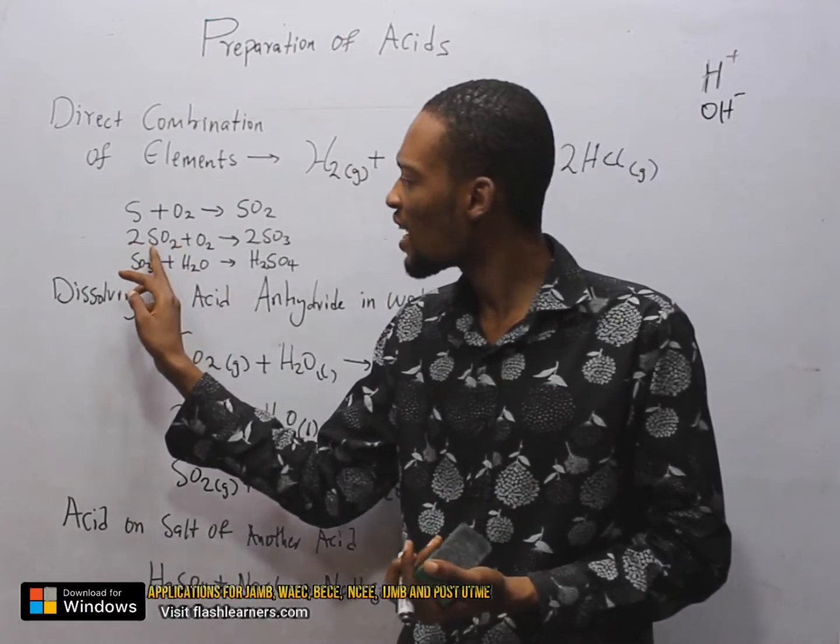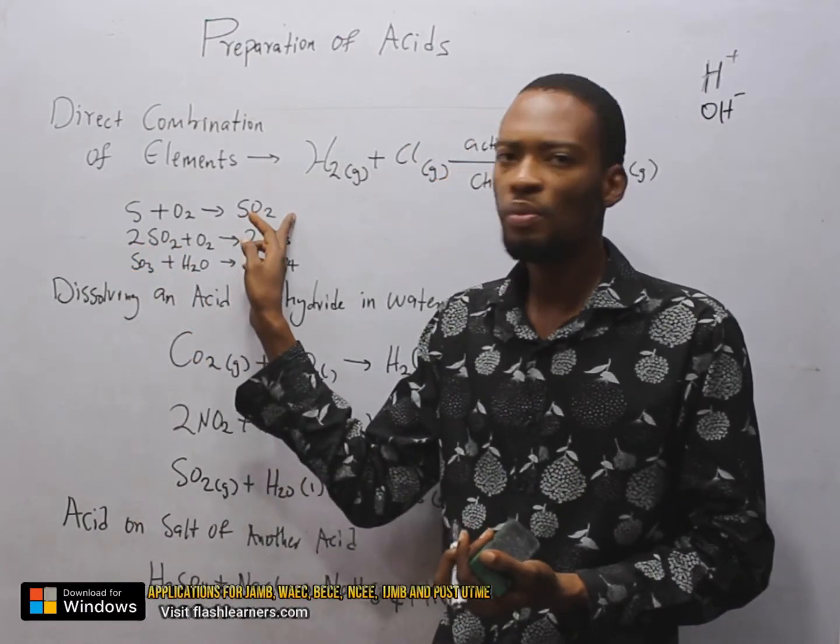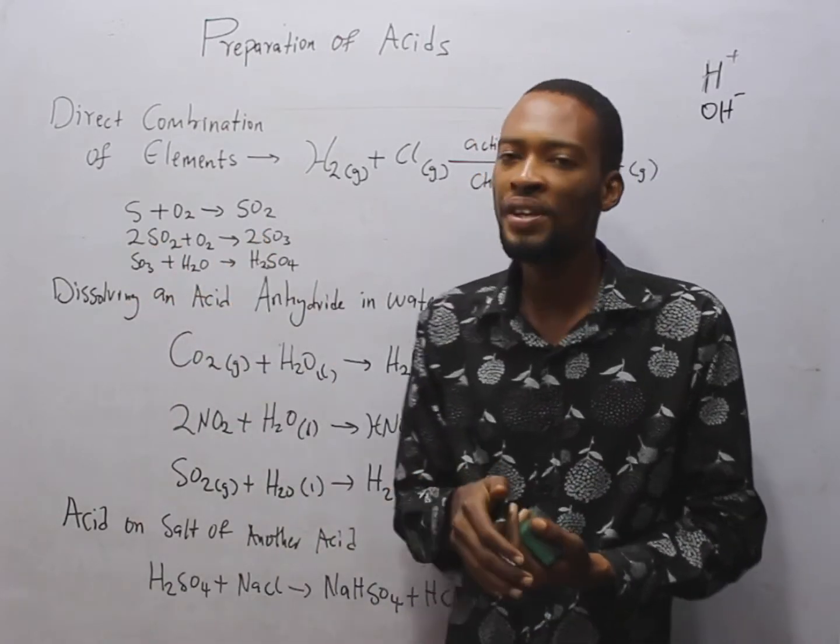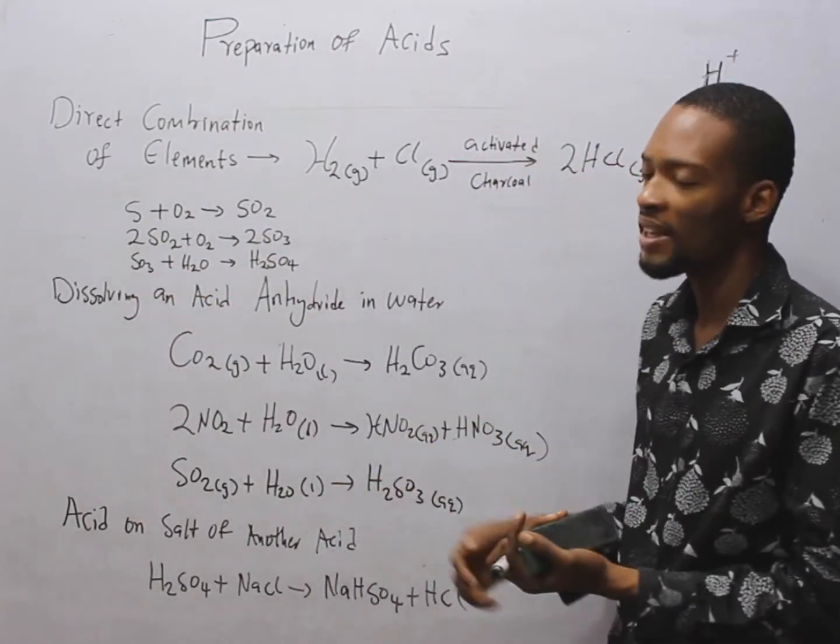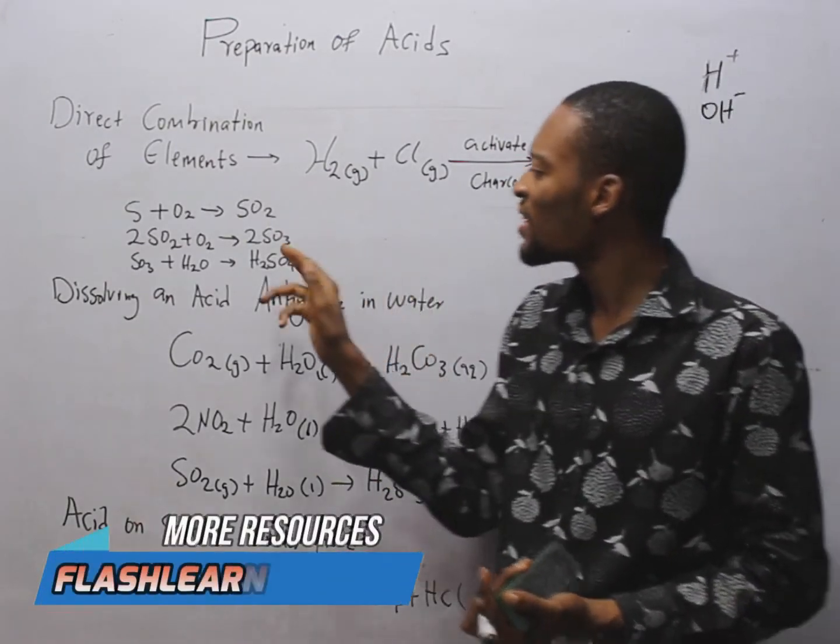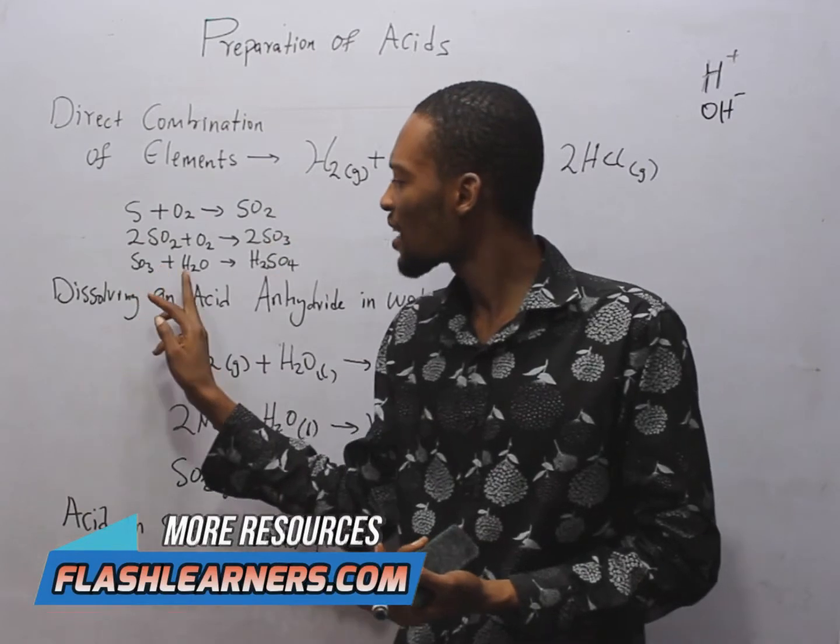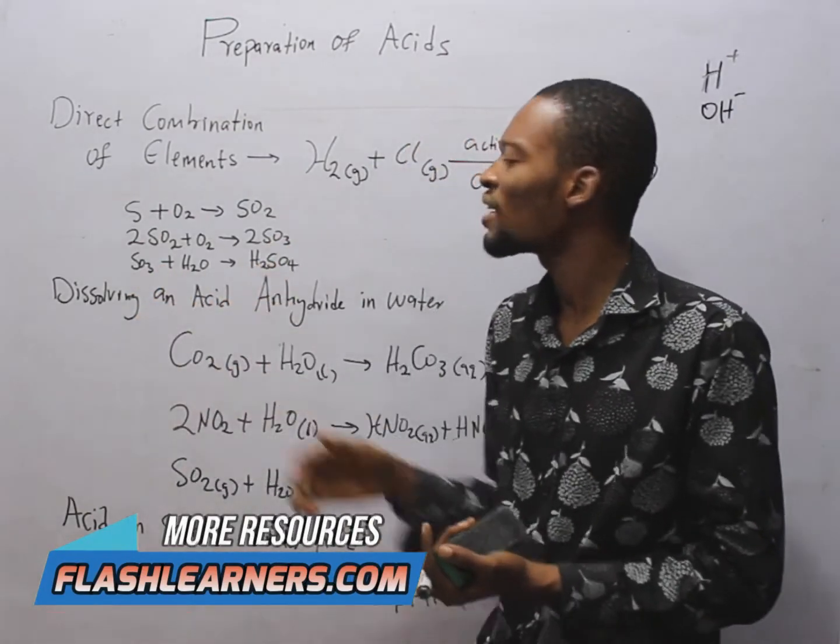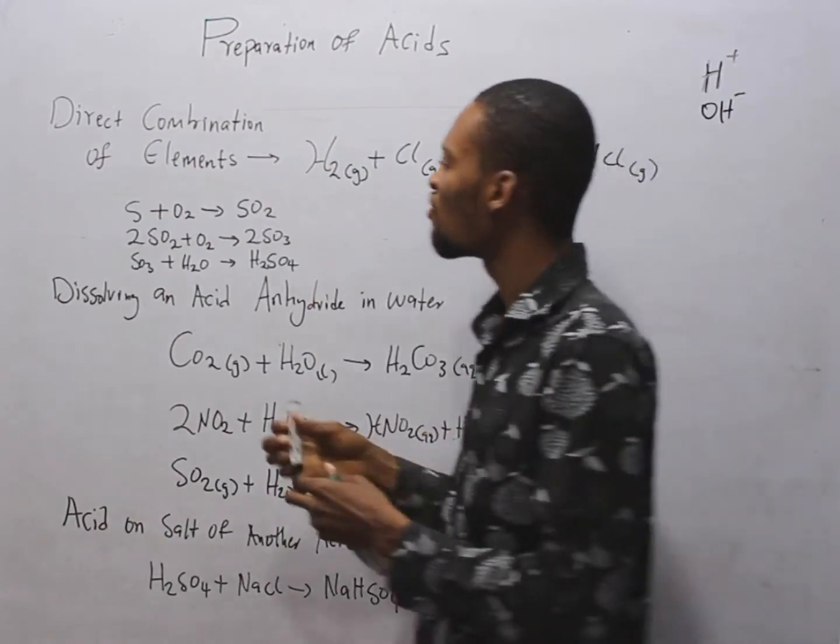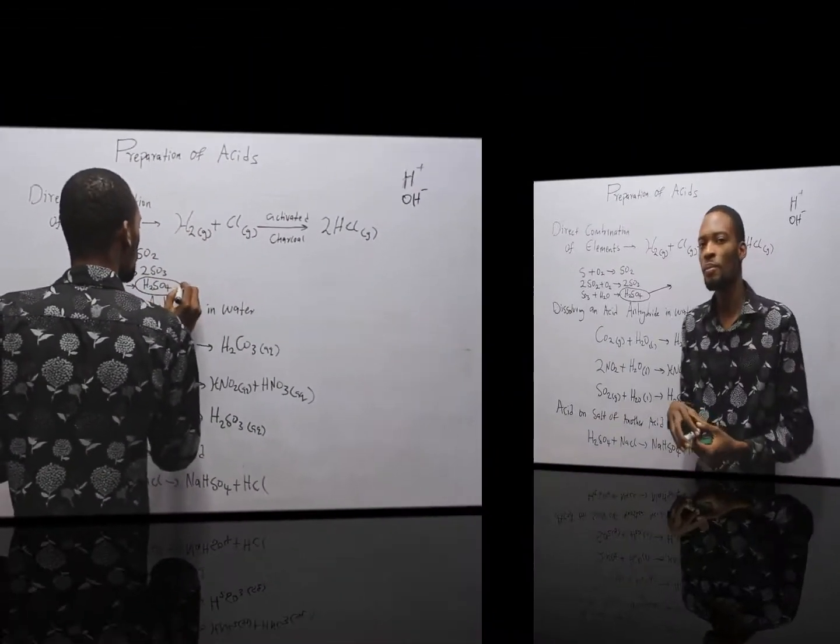If the SO2 formed, two molecules of that SO2 plus oxygen, it will give you 2SO3 which is trioxo sulfide. Then this SO3 reacts with water to give you H2SO4, tetraoxo sulfate. In this case, we prepared H2SO4.